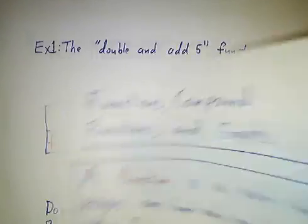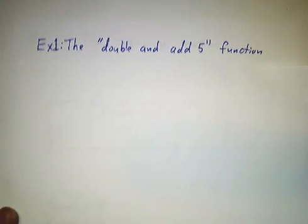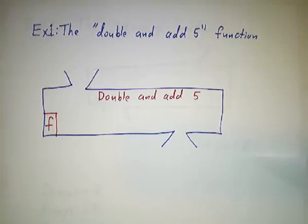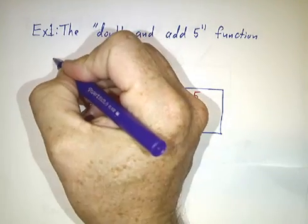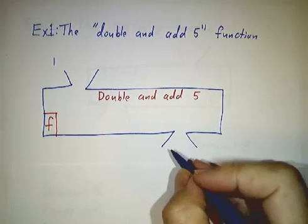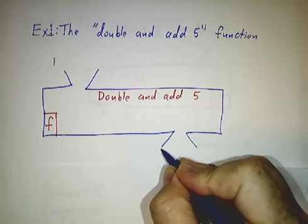Let's look at some examples. Here's a pretty simple one, the double and add 5 function. I said it's a rule, so it's a way of turning inputs into outputs, and to me I always think of a machine. You put the number 1 in, and if you double it and add 5, double 1 is 2, add 5, you get 7.